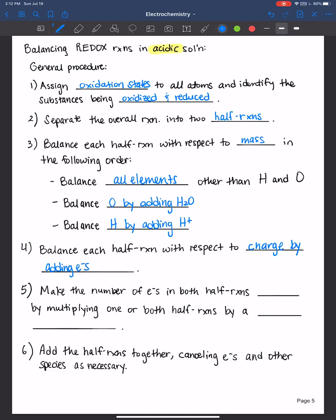Make the number of electrons in both half reactions equal by multiplying one or both half reactions by a small whole number.